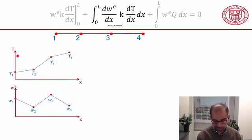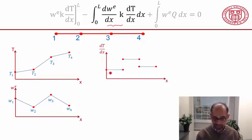So my temperature variation is that and the corresponding variation of the derivative of the temperature is that. And since we have a linear interpolation, the derivative is constant over each element.